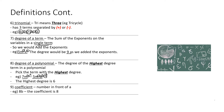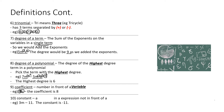Number 9, Coefficient: the number in front of a variable. Example: 8b — the coefficient is 8, because b is a variable and the number in front of that variable is 8.